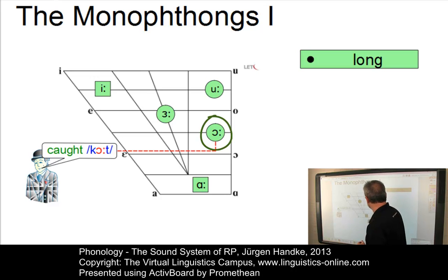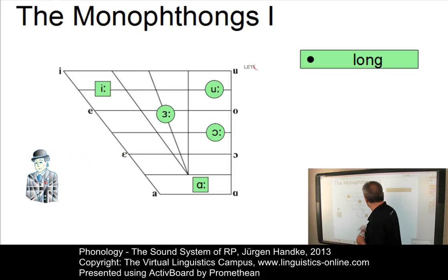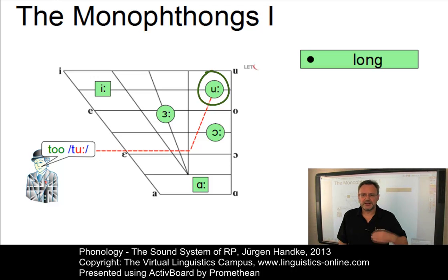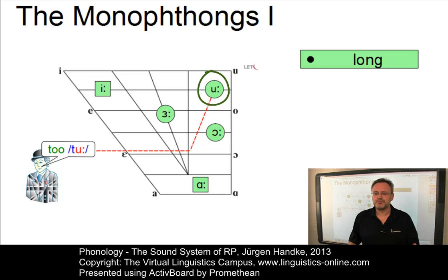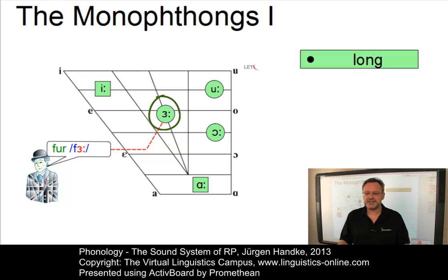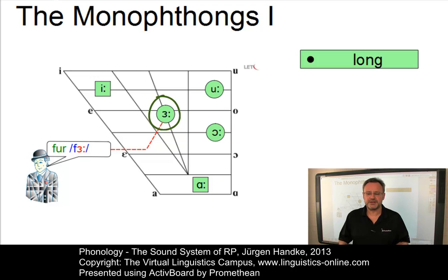The vowel in 'caught' is clearly a mid-monophthong in RP. The high back vowel, as in 'two,' is also slightly diphthongized, like its front counterpart, and most non-native speakers use a true monophthong instead. Last but not least, there is a central monophthong — this vowel is truly central — and the orthographical R is not realized phonetically in RP.